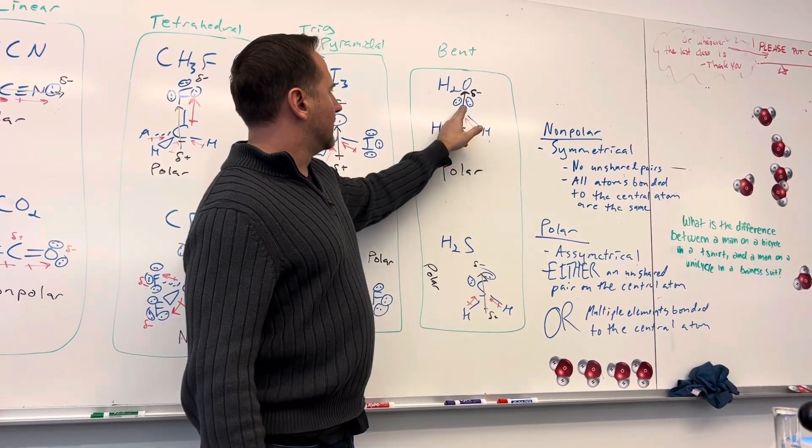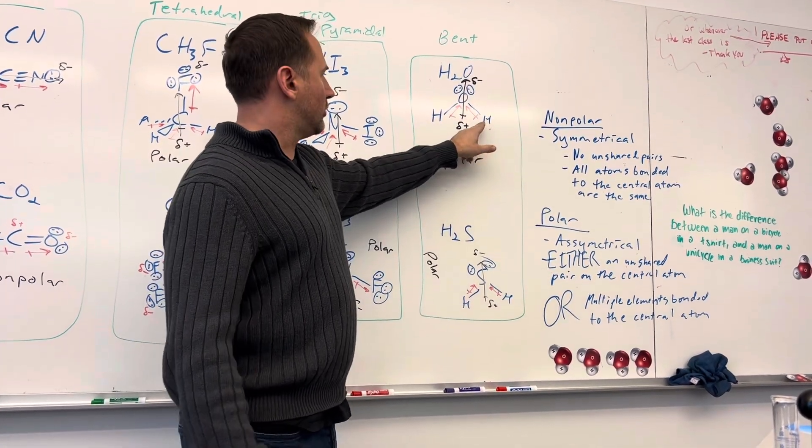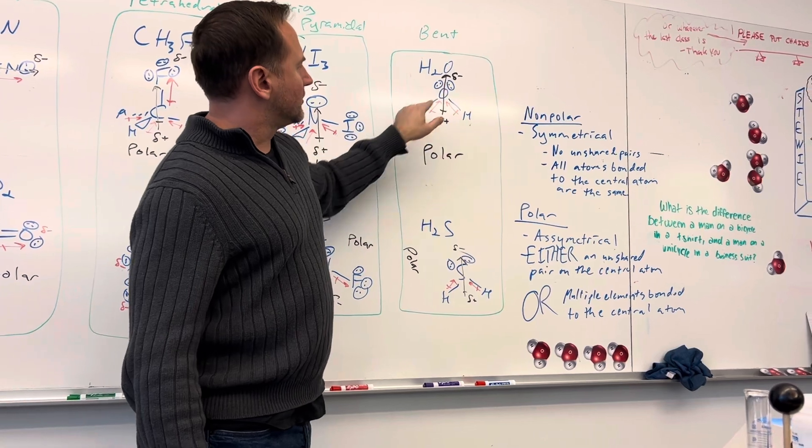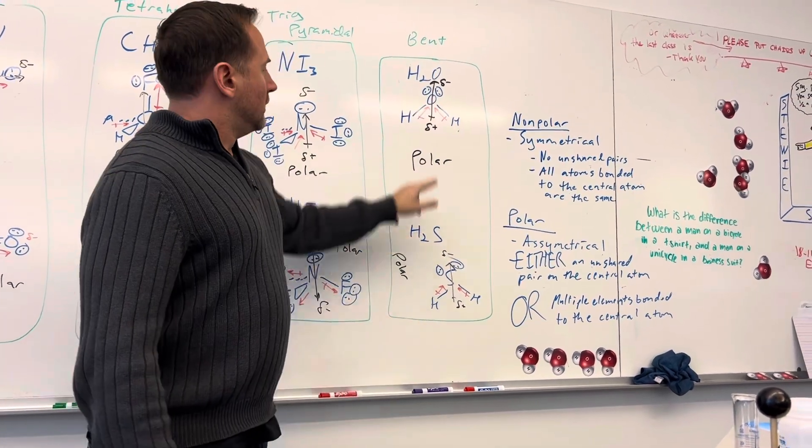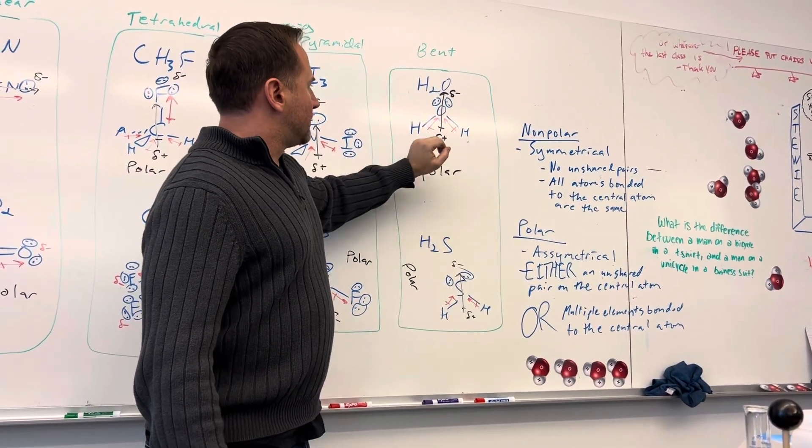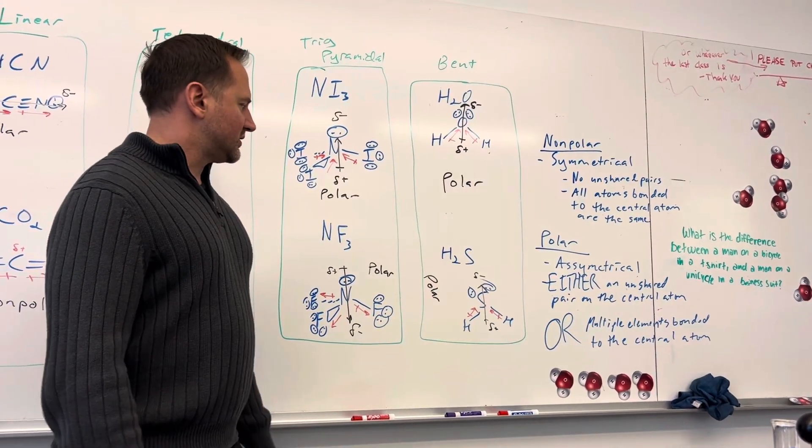In water, the poster child for polar molecules, the electrons are drawn towards the oxygen, and therefore that oxygen becomes partially negative, and your hydrogens will be partially positive.